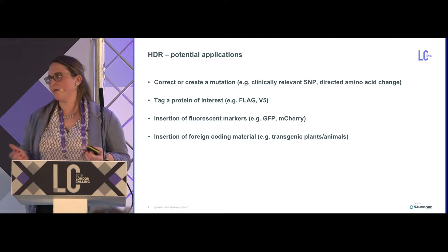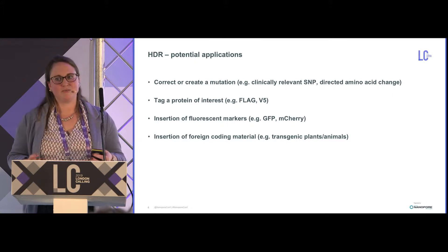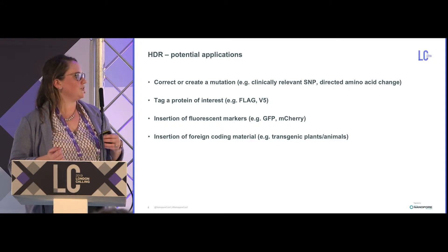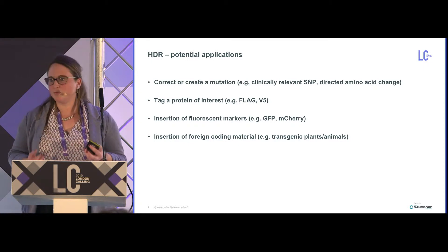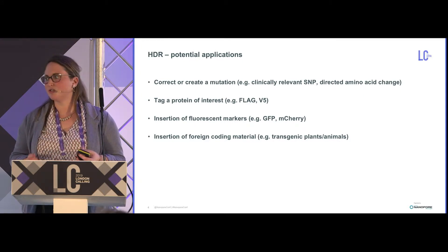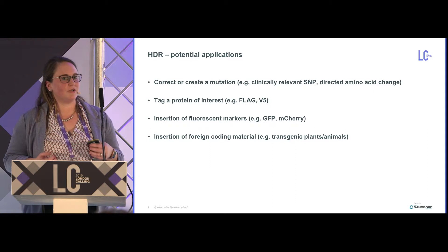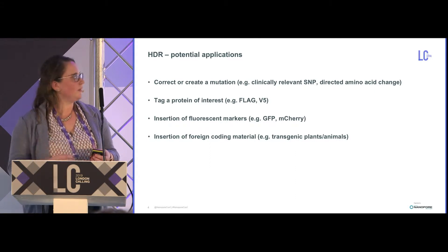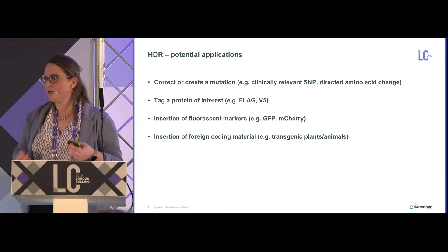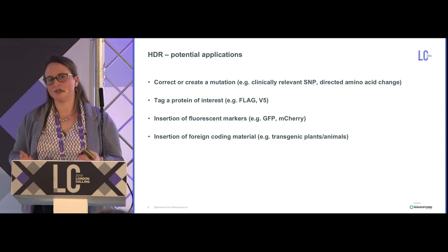Why utilize the HDR pathway in cells? There are many potential applications: repairing a clinically relevant SNP, a single base mutation, or doing a directed amino acid change. You can also tag proteins of interest with small tags like FLAG or V5, which are easy to analyze using traditional short-read sequencing. However, if you're inserting a fluorescent marker like GFP or mCherry, or inserting foreign coding material for transgenic plants or animals, these insertions are larger than what short-read sequencing can handle.